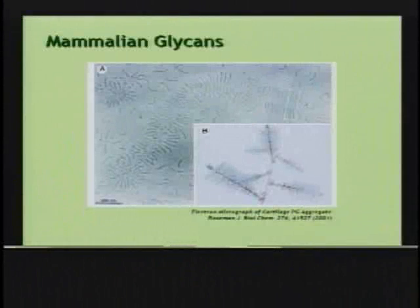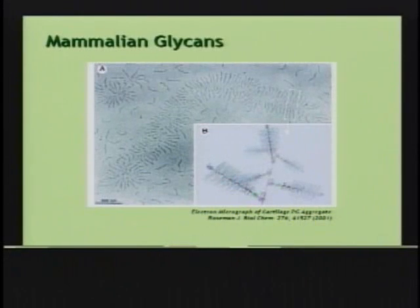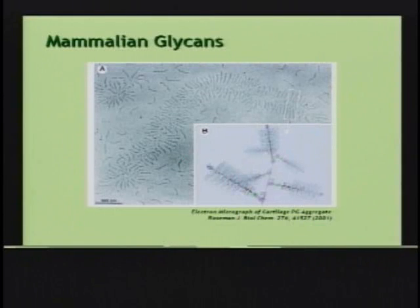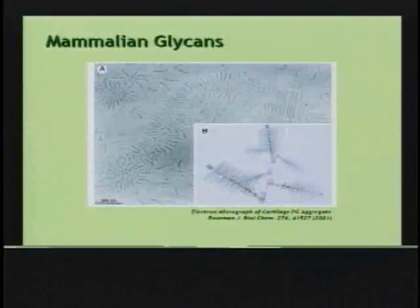Looking at complex polysaccharides in the mammalian system — this picture is an electron micrograph of a section of human cartilage. It's essentially made up of the family of molecules I mentioned, glycosaminoglycan, and specifically chondroitin sulfate. It is the largest polysaccharide component of the cartilage. If you zoom in, here's a protein with various carbohydrate chains radiating out of it, and there's a sense that these molecules play a role in hydrating the microenvironment of the cartilage, solubilizing a variety of different molecules — by and large thought to play a structural role.